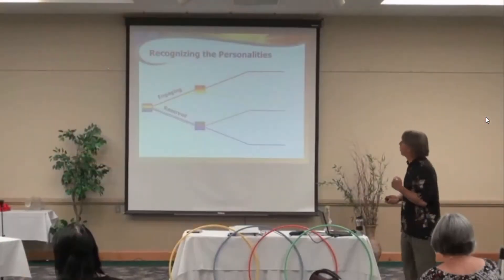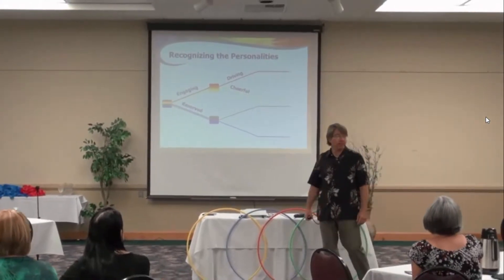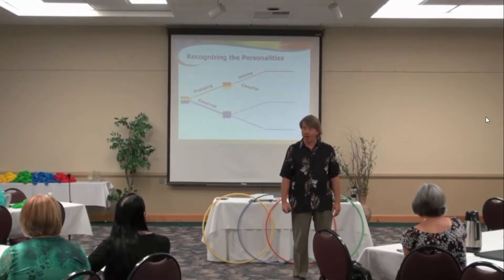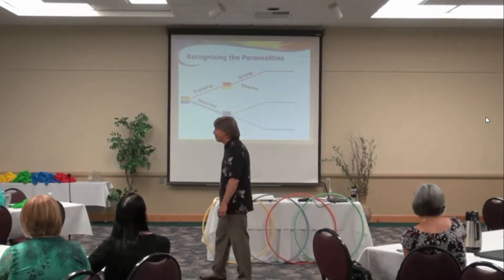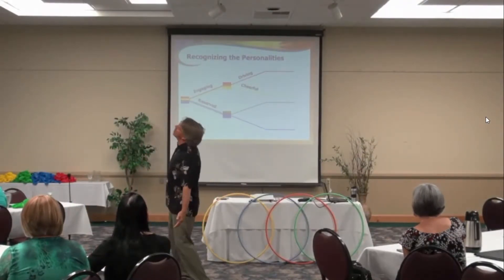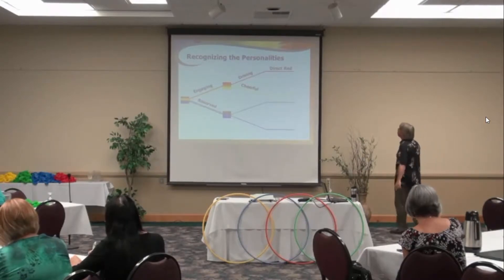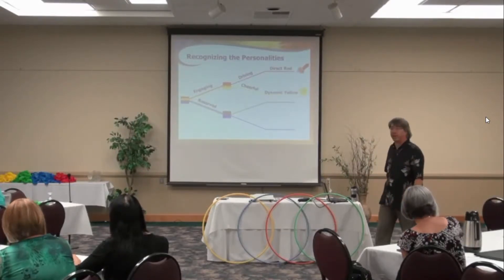Staying with the engaging branch — it's either driving or cheerful. Driving looks like being in control, taking control, knowing where they want to go. They have a very specific point A to point B. Cheerful is bouncy, energetic, fun. How quickly can you tell the difference between driving and cheerful? Another half second, still less than a second total. Engaging plus driving we call 'direct red.' Engaging plus cheerful we call 'dynamic yellow,' and we use the sun for that.